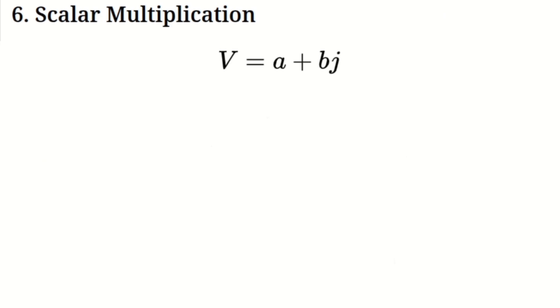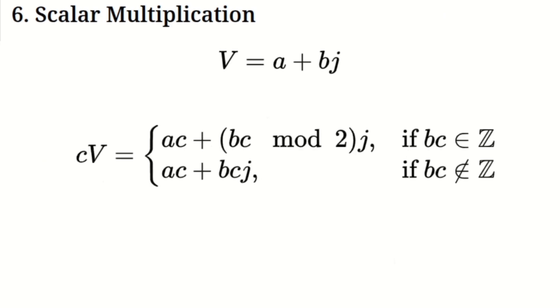Scalar multiplication. Now, let's move on to scalar multiplication. Scalar multiplication is when you multiply a virtual number by a regular real number, which we'll call C. When this happens, the real part of the virtual number is multiplied by C, just like regular multiplication. But the virtual coefficient of the virtual number is also multiplied by C. If this product turns out to be an integer, we apply the coefficient rule to the result. If it's not an integer, it stays unchanged.